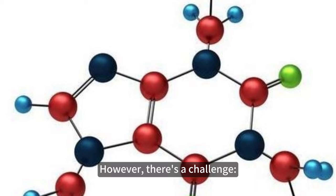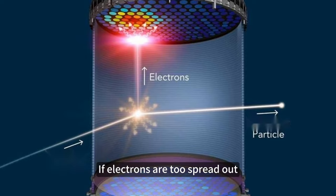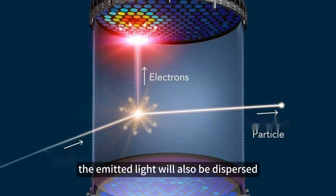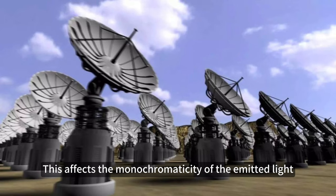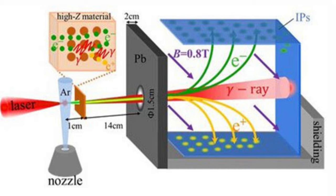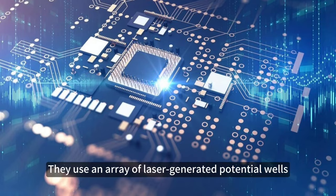However, there's a challenge: controlling the spread of electrons. If electrons are too spread out, the emitted light will also be dispersed, and the electrons won't move uniformly. This affects the monochromaticity of the emitted light.